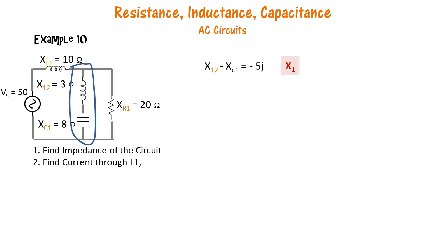And we know that these phasors are opposing each other so we can do x12 minus xc1, which is minus 5j. And remember to use the vector notations here. So we now have this in parallel with this, so that is the next thing we will look at.